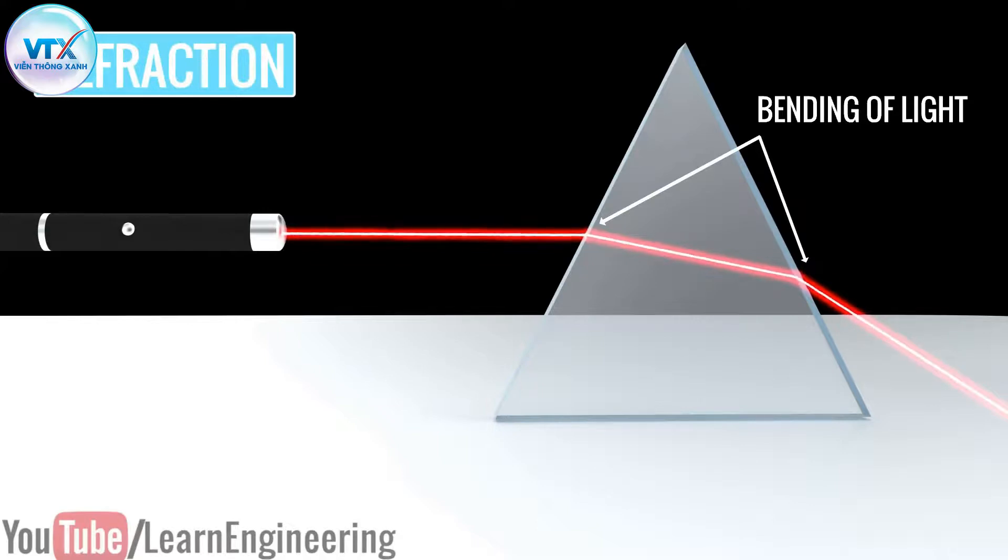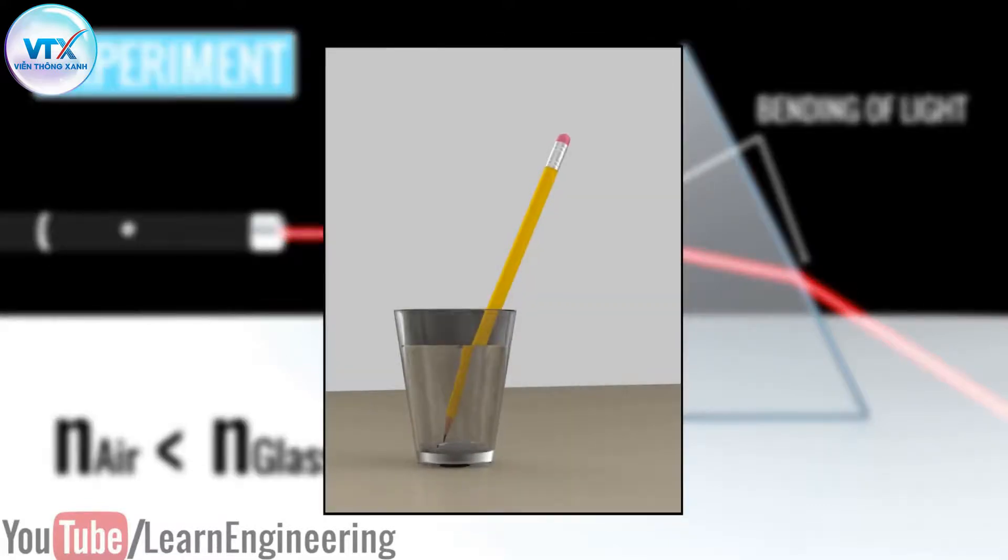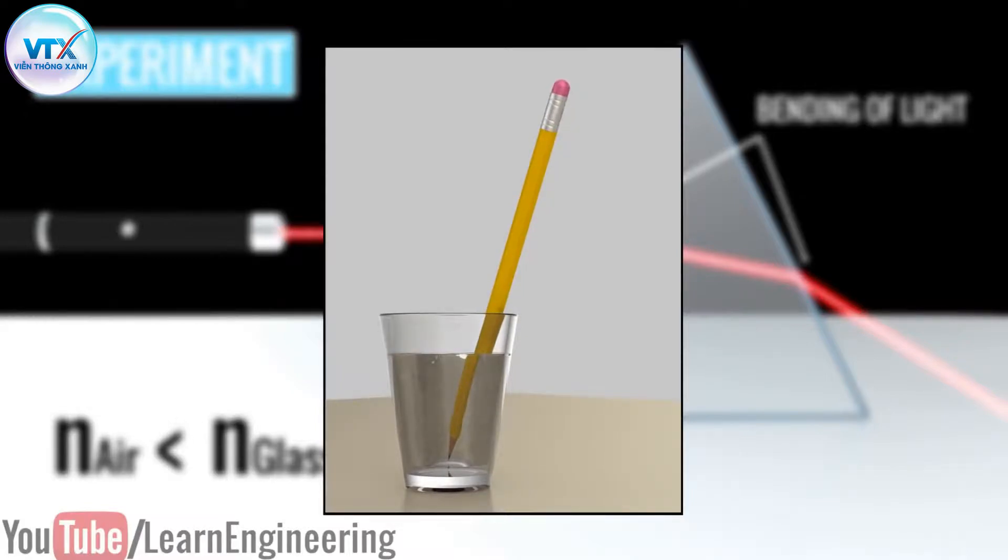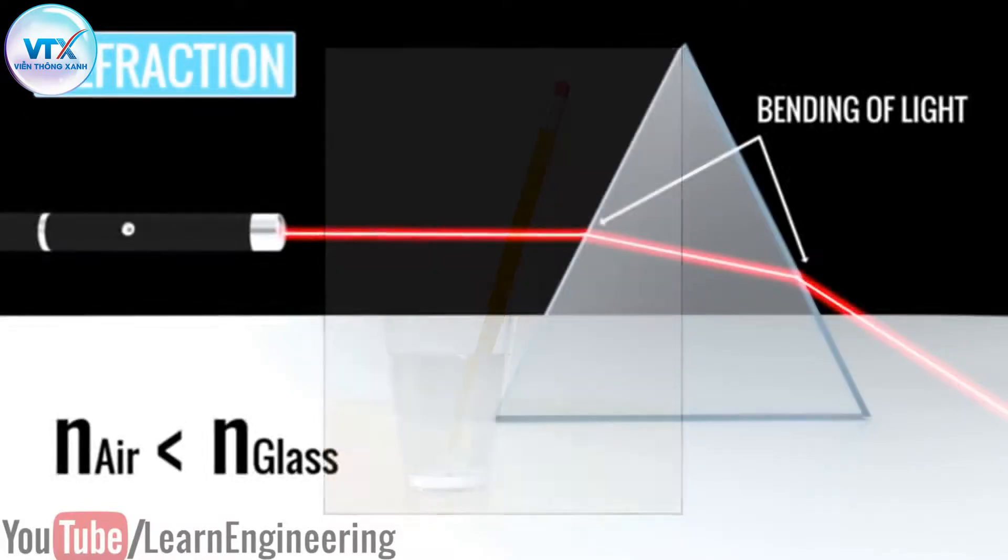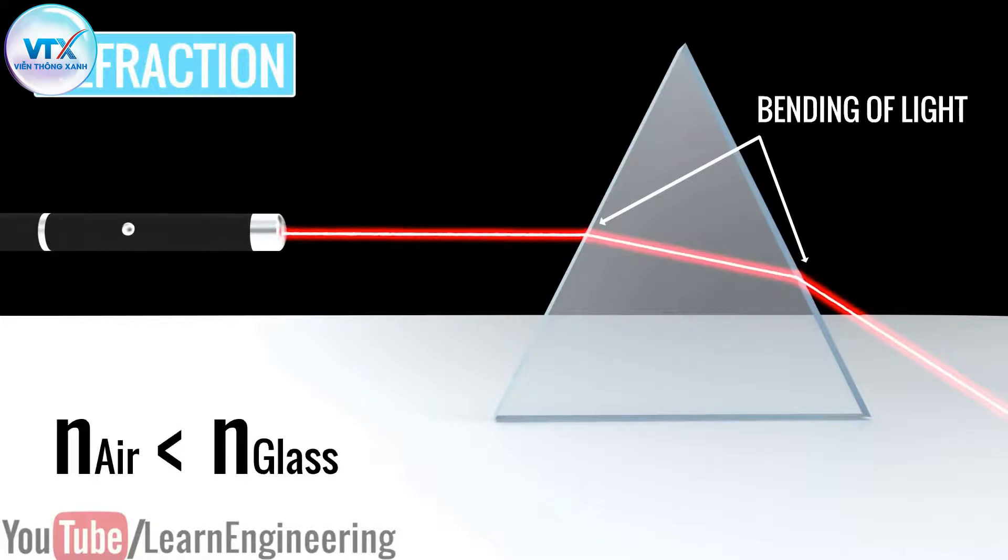Refraction occurs when light passes from a medium with one refractive index to one with another refractive index. The light bends towards the interface when it goes from a medium of high to one of low refractive indices. Refraction is the reason why a pencil looks bent in a glass of water. This simple refraction technique is effectively used in optical fibers.